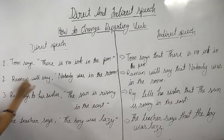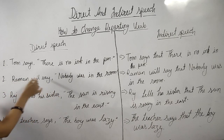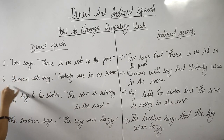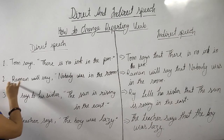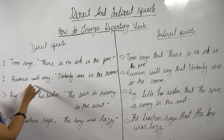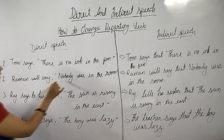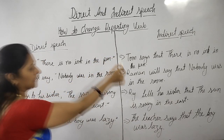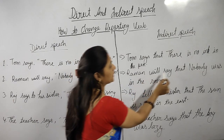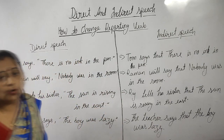Now look at the second example. Raman will say — here the reporting verb is in simple future tense. Then again, we don't have to change anything in the reported speech. The reported speech is: 'Nobody was in the room.' So: Raman will say that nobody was in the room.